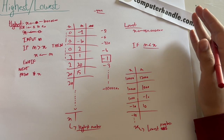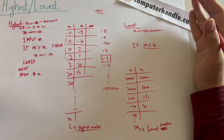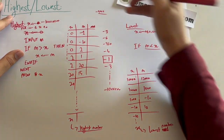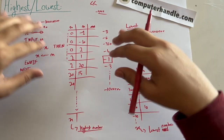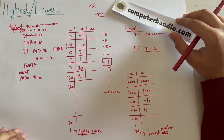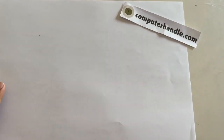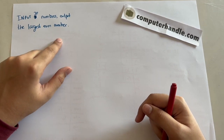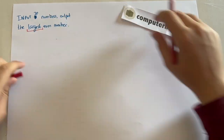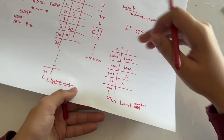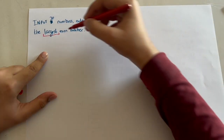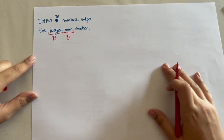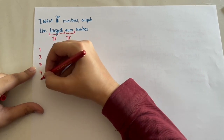Pause the video and think about it if needed — it's quite an important concept and technique. Now let's proceed to the practice question: input 20 numbers and output the largest even number. Note this asks for largest, so we'll use the same technique, but there's an additional condition for even numbers, meaning we'll need a combined if statement.